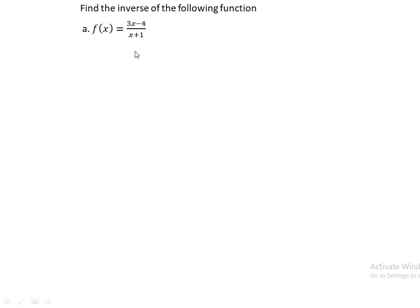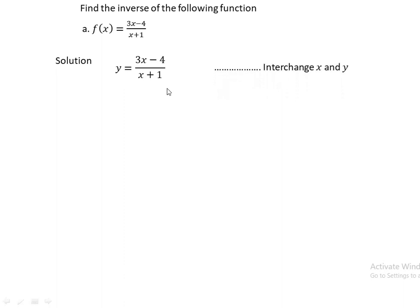For question a, write y as f(x): y = (3x - 4)/(x + 1). Then interchange x by y, meaning write x in place of y, so we have x = (3y - 4)/(y + 1).